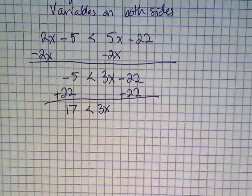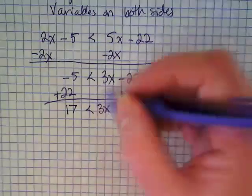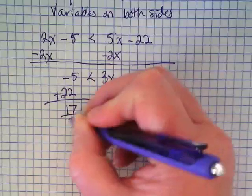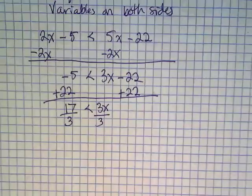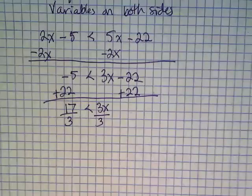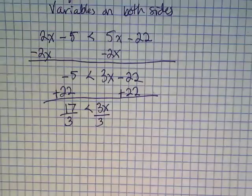17 is less than 3x. So we divide by 3. We're going to divide 17. I get it. This is algebra. That is the answer, 17 over 3.